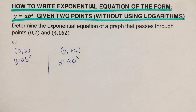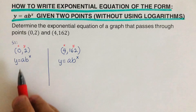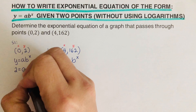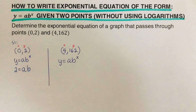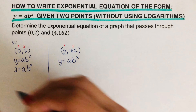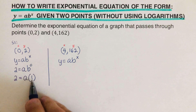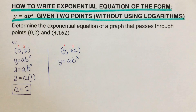In these points, this is our x and this is our y. We plug these values into the equation. Our y is 2, that equals a times b raised to the power zero — the exponent from the first point. Anything raised to the power zero is one, so 2 equals a times 1, which means our a equals 2.